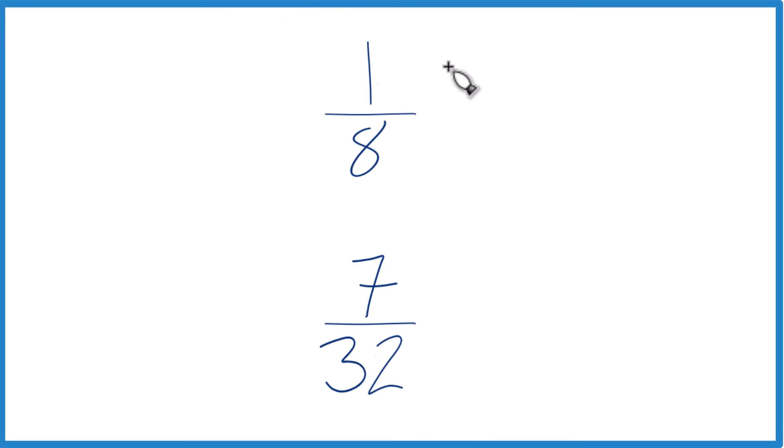Let's figure out which one of these fractions is larger, 1/8 or 7/32. So you could just do this on a calculator, divide 1 by 8, 7 by 32, and then compare the decimals.